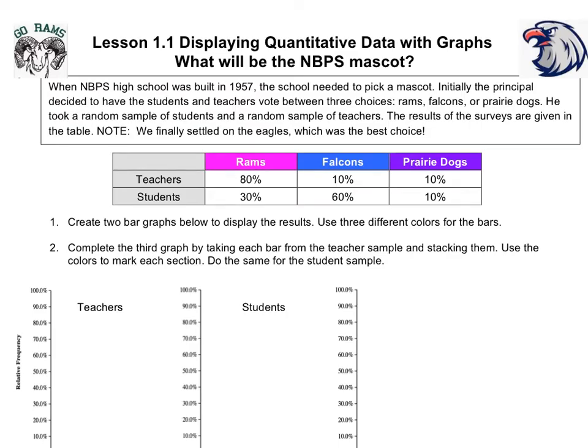The mosaic plot is another type of bar graph and we're going to use this little story to help us out. When MBPS High School was built in 1957, the school needed to pick a mascot. Initially, the principal decided to have the students and teachers vote between three choices: rams, falcons, or prairie dogs. He took a random sample of students and a random sample of teachers. The results of the surveys are given in the table. Note, we finally settled on the eagles which was the best choice. So, just a little disclaimer, this is a fictional story but we're going to use this data to help us learn about mosaic plots.